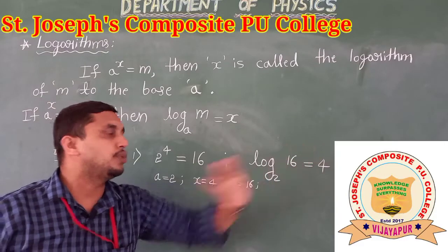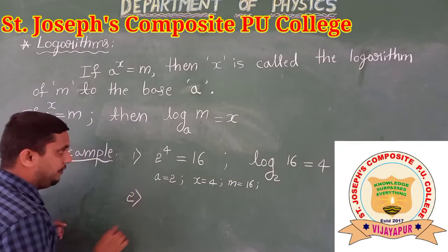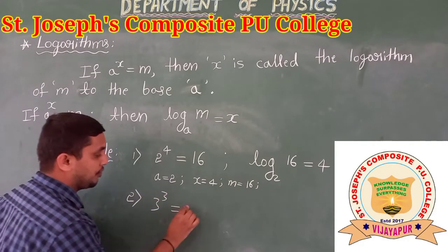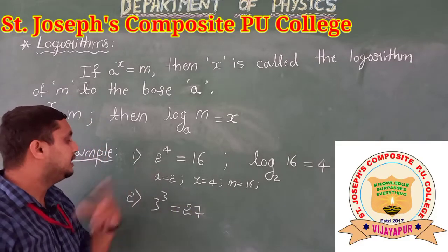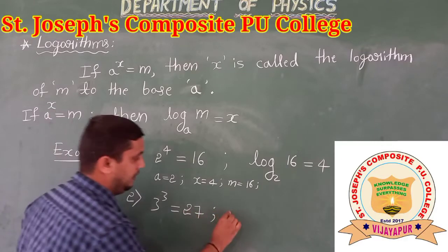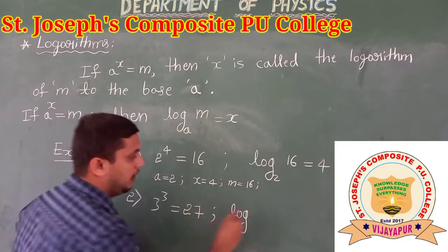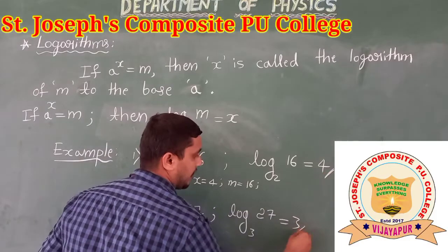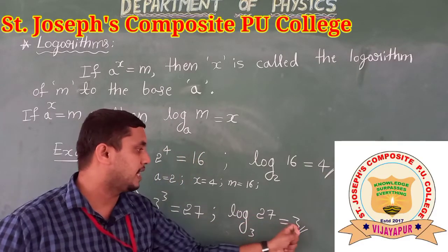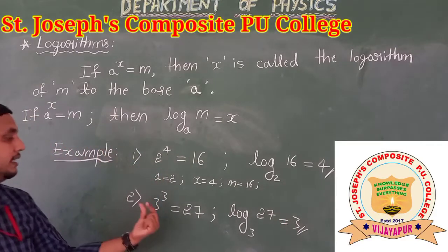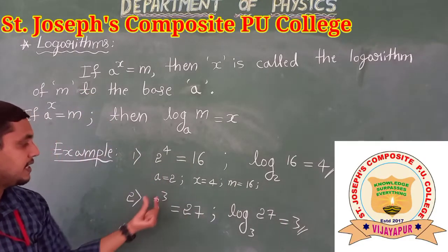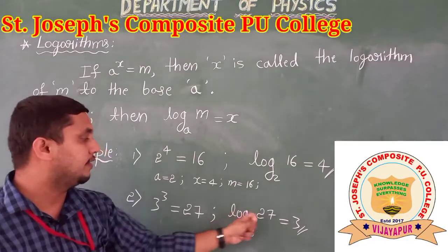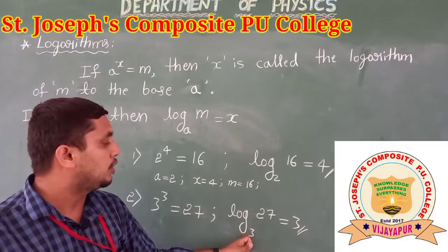Log 16 to the base 2 is equals to 4. Similarly, if 3 cube is equals to 27, then log of 27 to the base 3 is equals to 3. So we can write a logarithm: if it is in the form a to the power of x is equals to m, then logarithm we can write it as log of m to the base a is equals to x.